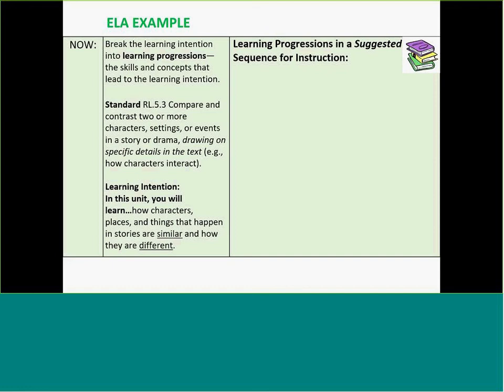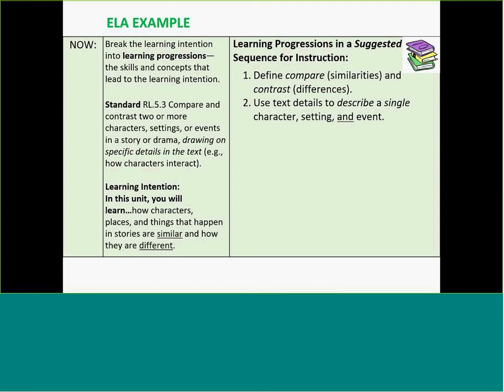I'll show you a quick example with ELA. You'll notice I've got the standard and the learning intention because we always want to keep the end goal in mind. The teachers in this particular unit decided they would begin with: first kids need to know the words compare and contrast, synonyms, similarities and differences. Then we want them to start using text details to describe a single character, setting, and event — even though the standard said 'or event.' Remember, we're teaching them to do all three. Pay attention to the verbs because notice how they're lower level thinking skills, and as we start moving through this short list, you'll see the rigor building.